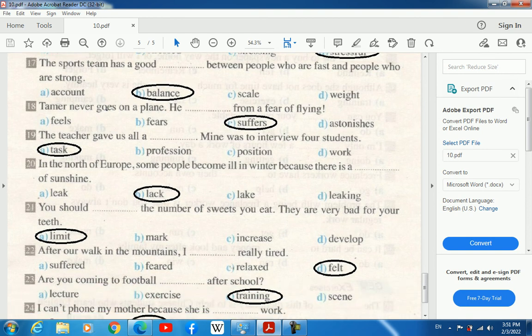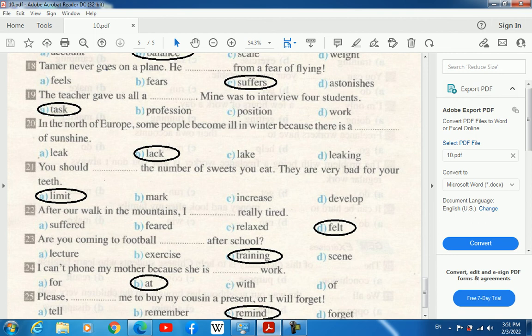17. The sports team has a good balance between people who are fast and people who are strong. 18. Tamir never goes on a plane. He suffers from a fear of flying.